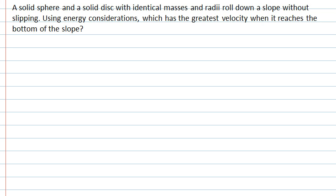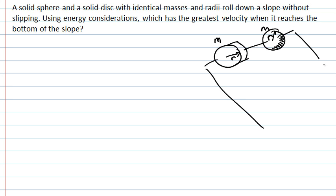This question is about rolling motion and conservation of energy. Pause the recording and have a read through the question carefully. In this question we have a solid disk of radius r and a solid sphere also of radius r, each with a mass of m. They are rolling down a slope, and as they roll down, gravitational potential energy is converted into kinetic energy.